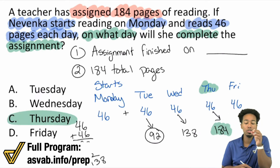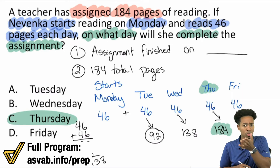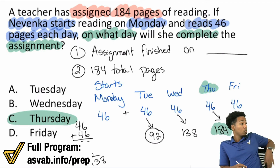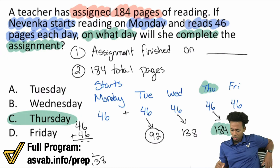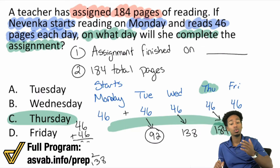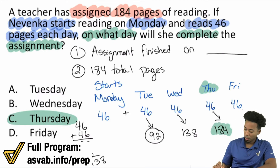Here's the thing — what if we had 2,000 or 2,500 pages of reading? This caveman method would take way too long. That's why I want you to understand we should see this as a distance, rate, and time word problem. Let me show you how to set this up the proper way.